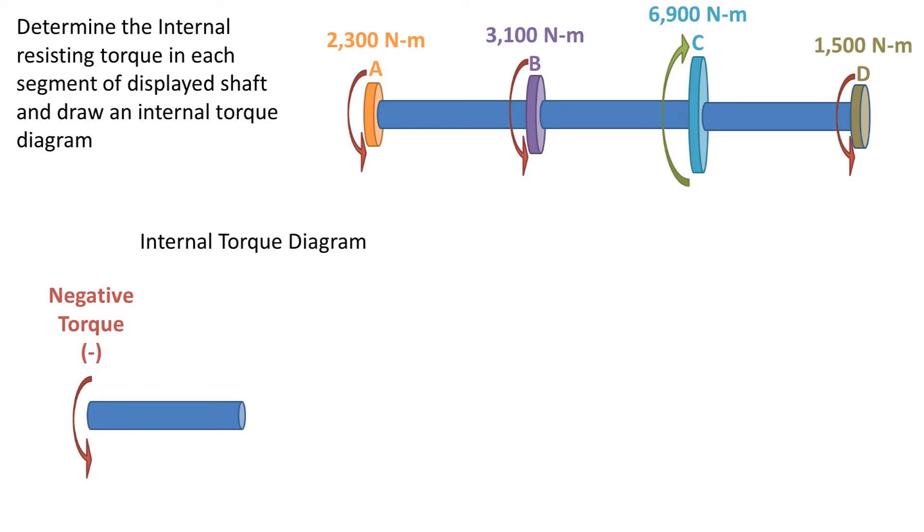To begin, we need to define positive and negative torque. The convention I was taught is, for the side facing you, if the torque is rotating the shaft from top to bottom, it is negative torque. For the side facing you, if the torque is going from bottom to top of the shaft, it is positive torque.